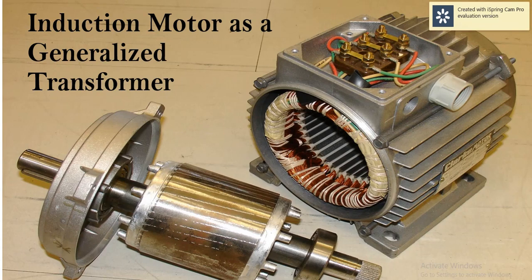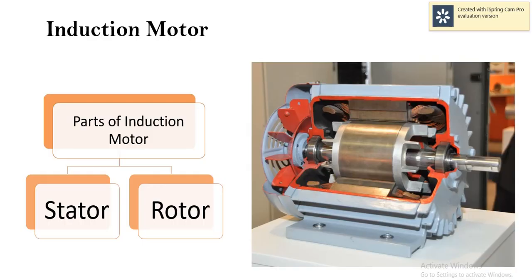Hello everyone. The topic for today is induction motor as generalized transformer. Induction motor has two parts: stator and rotor. Stator is the stationary member whereas rotor is the rotating member of the induction motor.